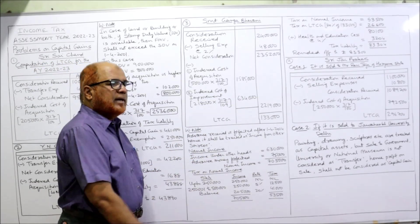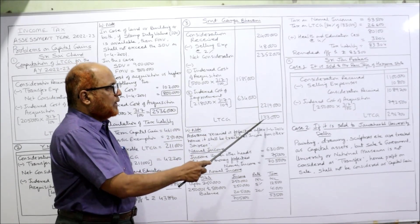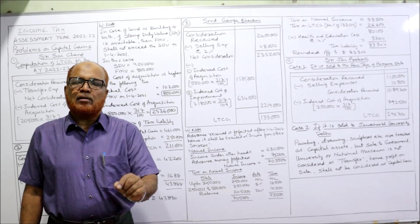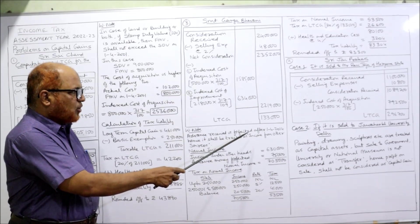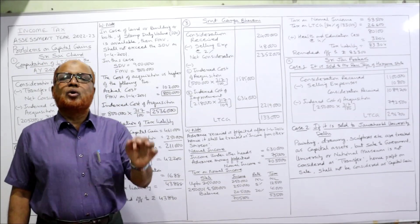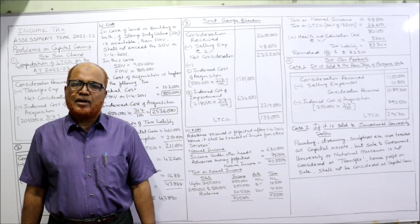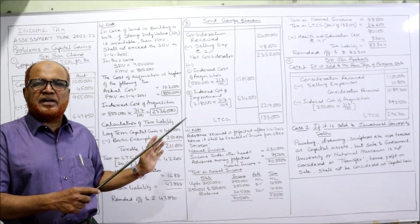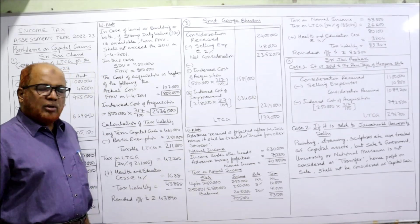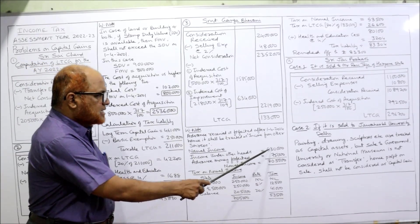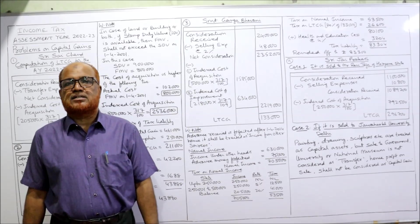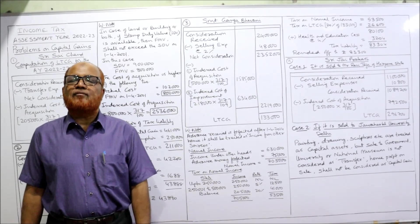Add both indexed costs to get Rs. 22,19,000. Deduct from net consideration to get long-term capital gain of Rs. 1,33,000. The problem also asks for tax liability. In working note: advance received was forfeited after 1st April 2014, hence it shall be treated as income from other sources. In the examination, you must write all these working notes. Normal income: income under other heads is Rs. 6,30,000 as given in the problem. Add advance money forfeited Rs. 75,000, giving total normal income of Rs. 7,05,000.